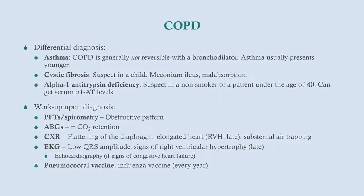The differential for COPD includes asthma — COPD is generally not reversible with a bronchodilator, whereas asthma is, and asthma typically presents in younger patients. Cystic fibrosis would not present for the first time in a 50-year-old; you'd suspect it in a child with a history of meconium ileus or malabsorption. Alpha-1 antitrypsin deficiency can cause emphysema and is more rare — you'd expect it in a non-smoker or a patient under 40. If such a patient starts smoking without knowing they have the deficiency, they'll develop COPD very quickly.